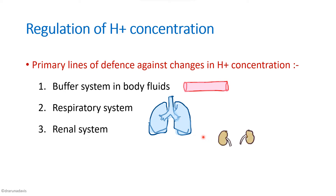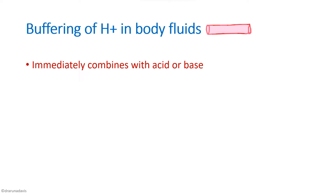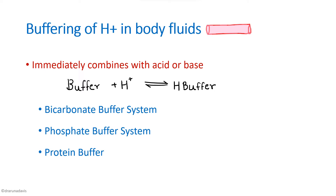Finally, we have the renal system, which is much slower compared to the other two systems, but is useful in flushing out acids produced inside the body, which also helps in maintaining pH. These are the three different systems present to maintain pH. Here we will focus on the first one — the buffer system in body fluids. Buffers basically combine with an acid or a base. A buffer is any substance that can reversibly bind hydrogen ions. The body has three buffer systems: the bicarbonate buffer system, the phosphate buffer system, and the protein buffer.